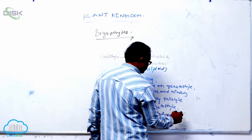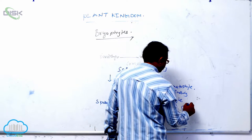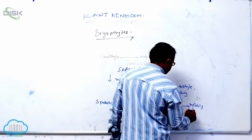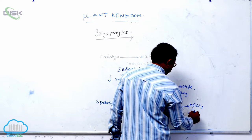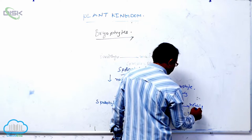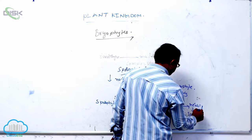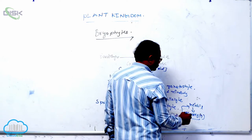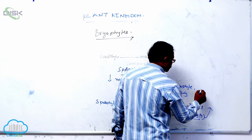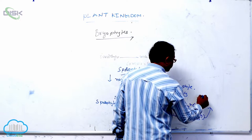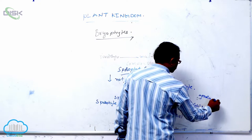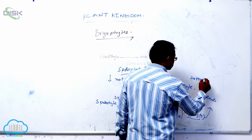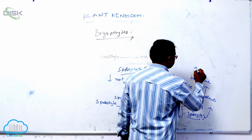The capsule produces spore mother cells. These spore mother cells undergo meiosis to produce spores. By meiotic division, the spores are present in haploid condition. After that, the spores germinate to produce the gametophyte.